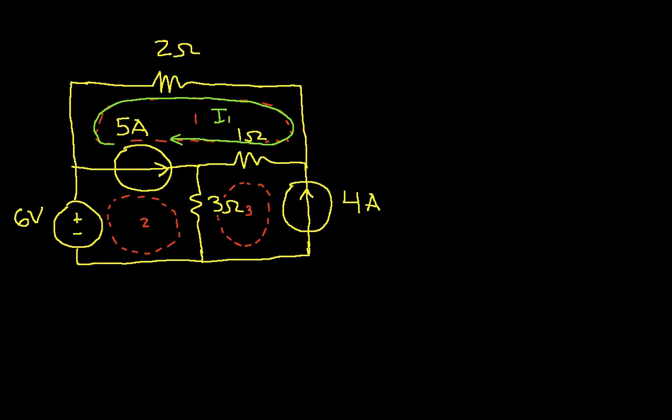We'll draw mesh current I2 like this, and I'm drawing them all clockwise. Again, if you want to be contrarian, draw them all counterclockwise, it will still work. But don't mix clockwise and counterclockwise. You can do it if you're good, but you probably don't want to put yourself through that pain. And finally, we'll draw I3.